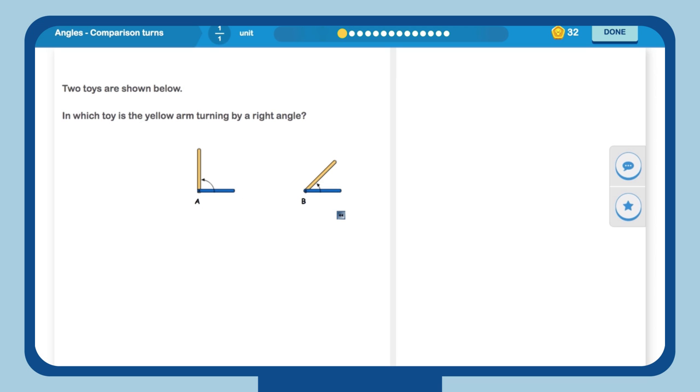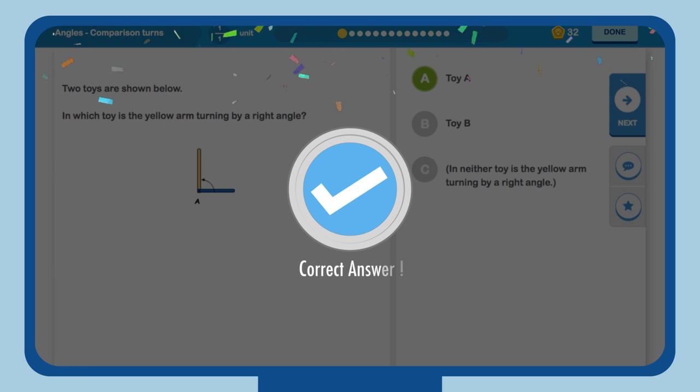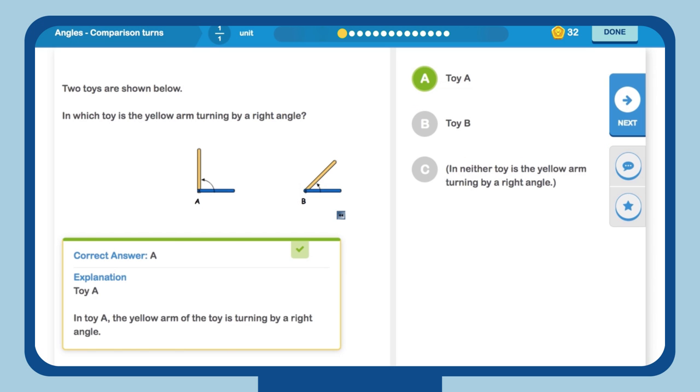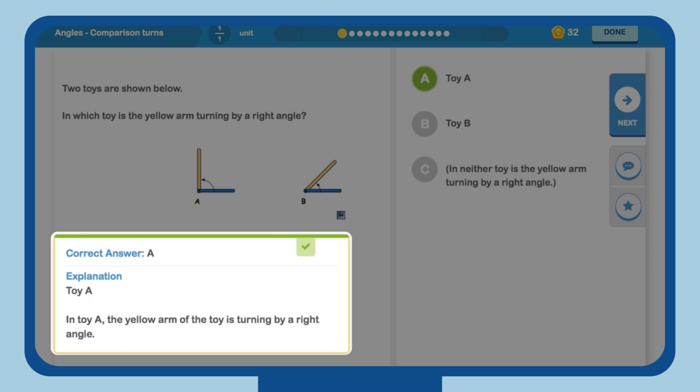MindSpark starts with a very basic question. Which arm is turning by a right angle? Aarti without hesitation clicks A. Woohoo! That's a right answer! Aarti surely knows her basics. MindSpark immediately tells her why it's right.